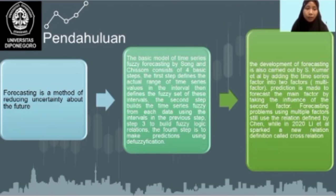Forecasting is a method of reducing uncertainty about the future. The basic of the time series fuzzy forecasting by Song and Chissom consists of four basic steps. The first step is to define the actual range of time series values in the interval, then define the fuzzy set of this interval.